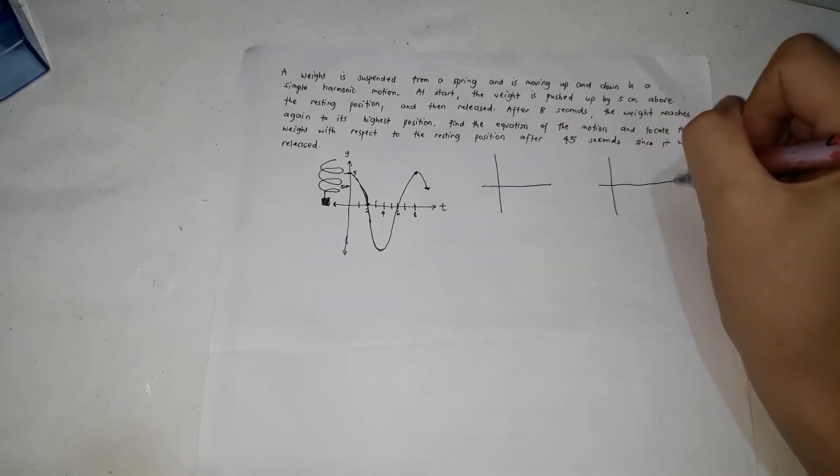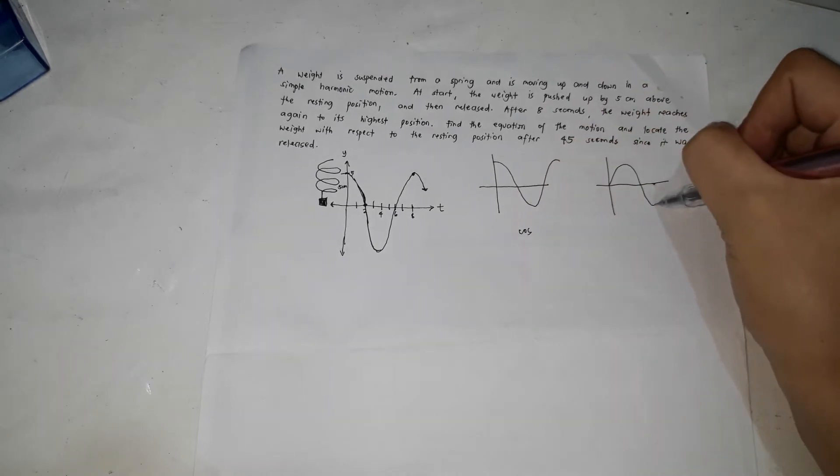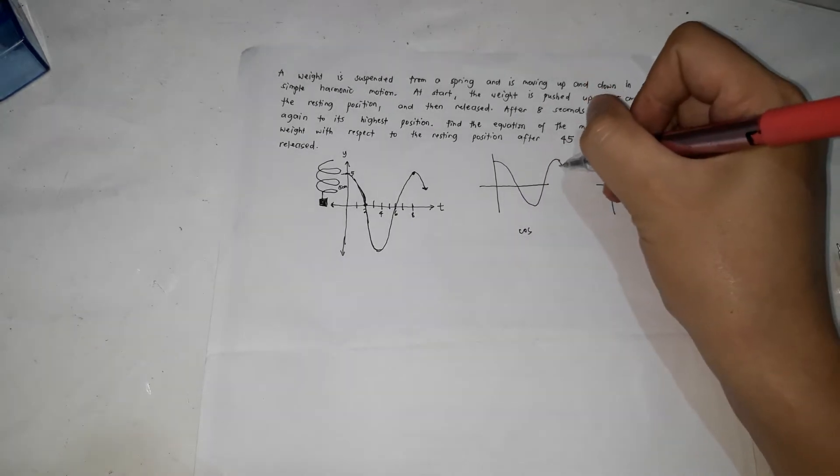This is the illustration of the graph of the motion of the weight on the spring. As you can see, this is more or less a sine or cosine function — the graph of a sine and cosine function. So the next thing we are going to do is compare it with the graph of sine and cosine. If this is the cosine graph, and this is the sine graph.